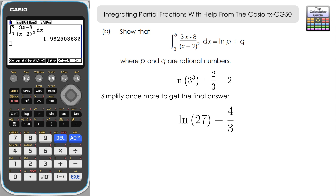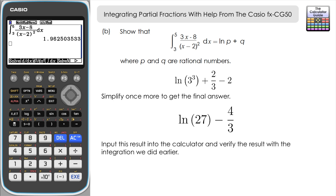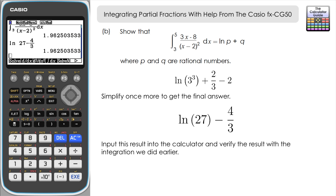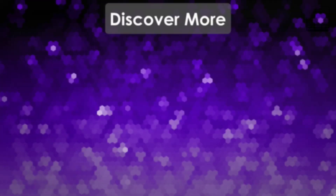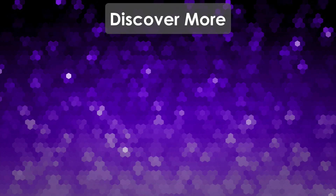To verify this, we input ln(27) − 4/3 into the calculator and press execute. The decimal result is 1.9625, which matches exactly what we obtained earlier from the direct numerical integration. We can be 99.9% certain our answer is correct. That's it for this video — don't forget to subscribe for future videos, and thank you very much for watching.